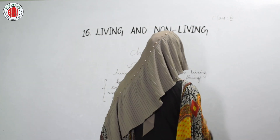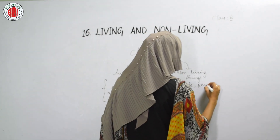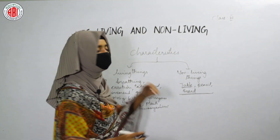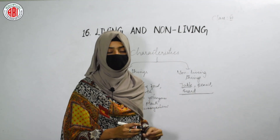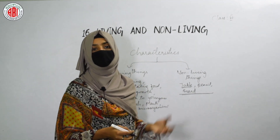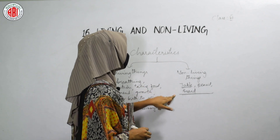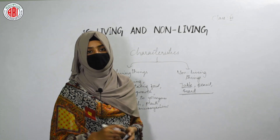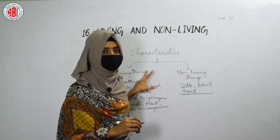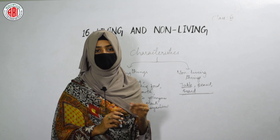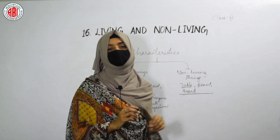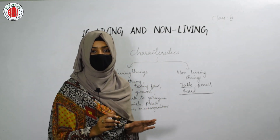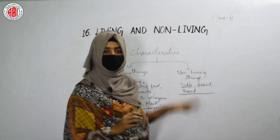In the non-living things, we can take more examples like pencil, pen, board, and marker. All these are non-living things because they do not move from one place to another, they do not grow, they do not take food, and they do not excrete anything. This is how we can classify things present in our surroundings into two types — living things or non-living things — based on their characteristic features.